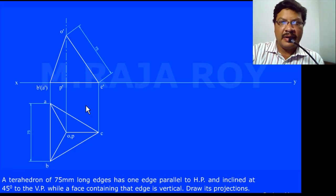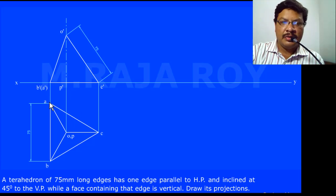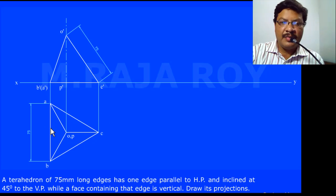So when the axis is inclined to HP, according to our standard procedure, you have to keep the axis perpendicular to HP. When the axis is perpendicular to HP, you will get the true shape and size of the base in the top view. So start your problem from the top view, draw the top view as shown, and from the top view project the front view.